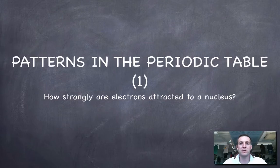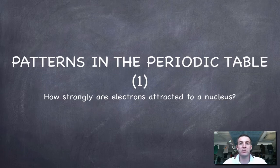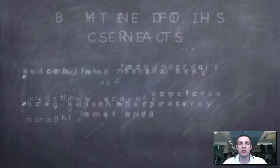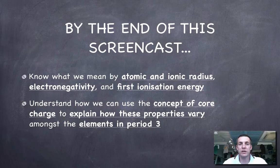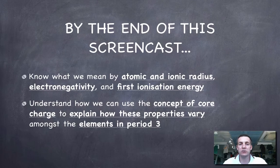Hello and welcome to this film which is all about patterns in the periodic table. Having introduced the periodic table in the first film, we're going to start talking about atomic and ionic radius, electronegativity and first ionization energy. We're going to see if we can use the concept of core charge to explain why we observe the patterns we do for these three properties as we move around in period three.